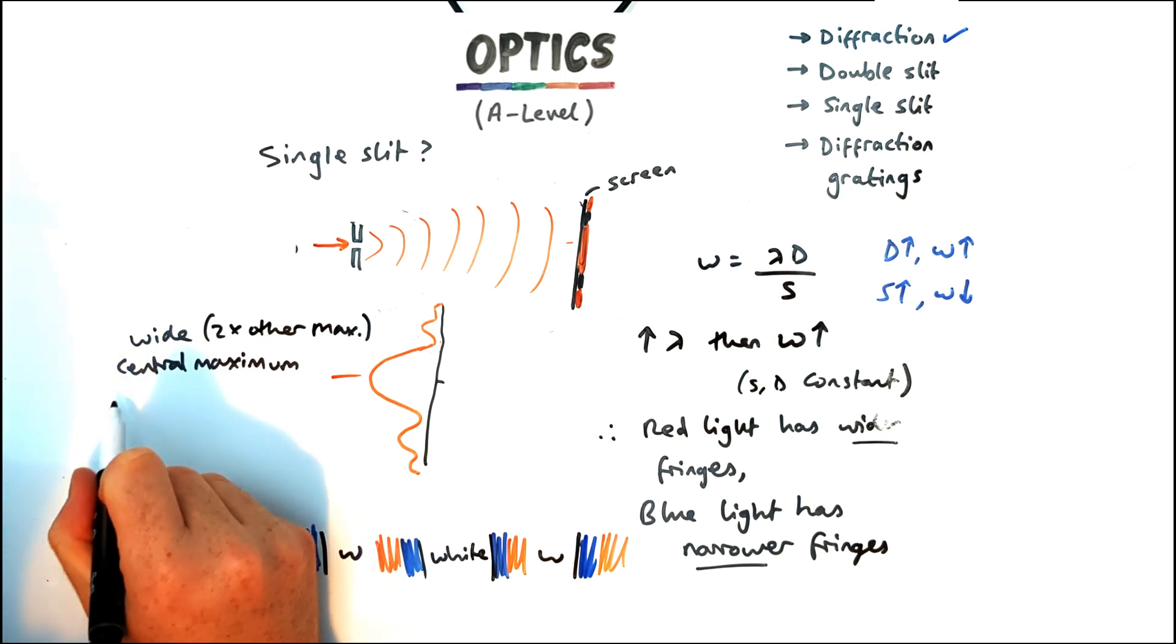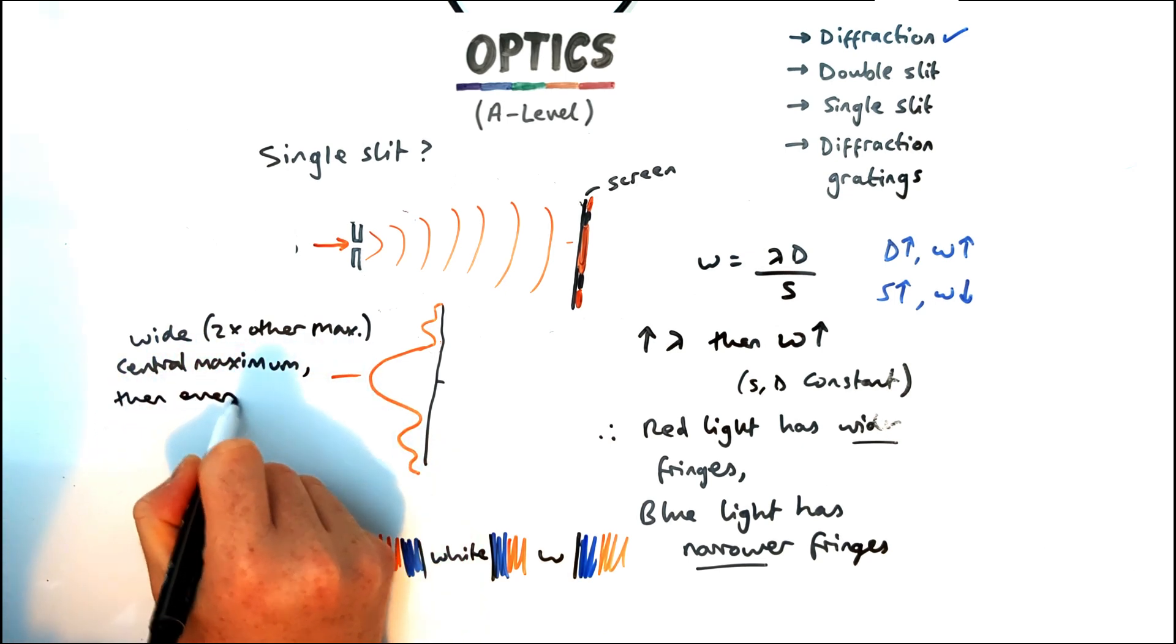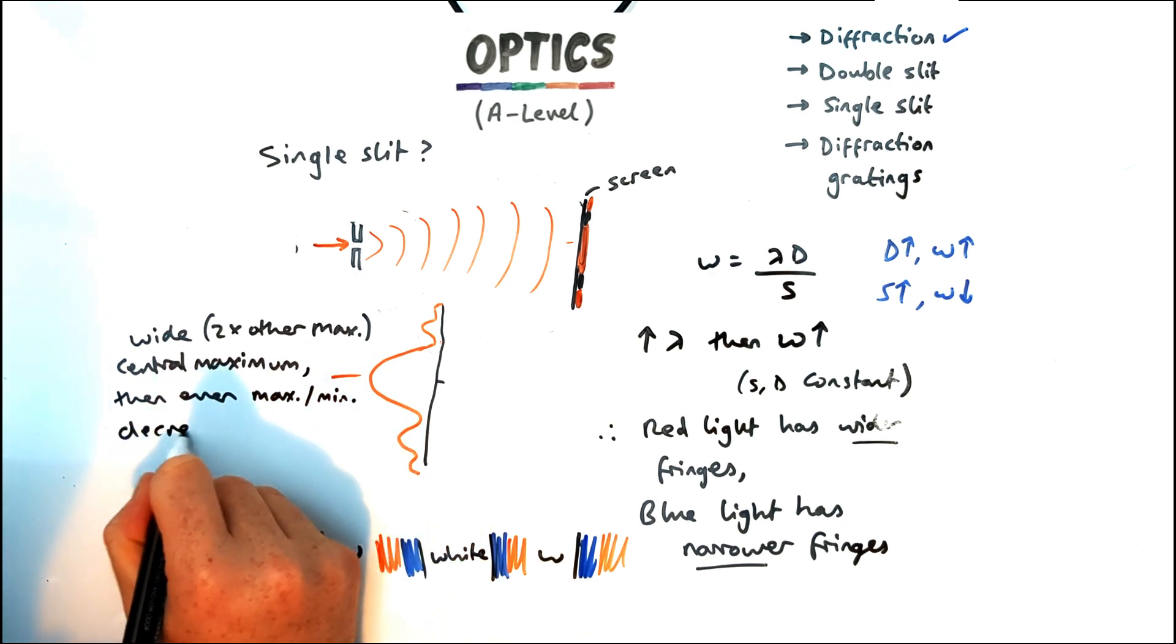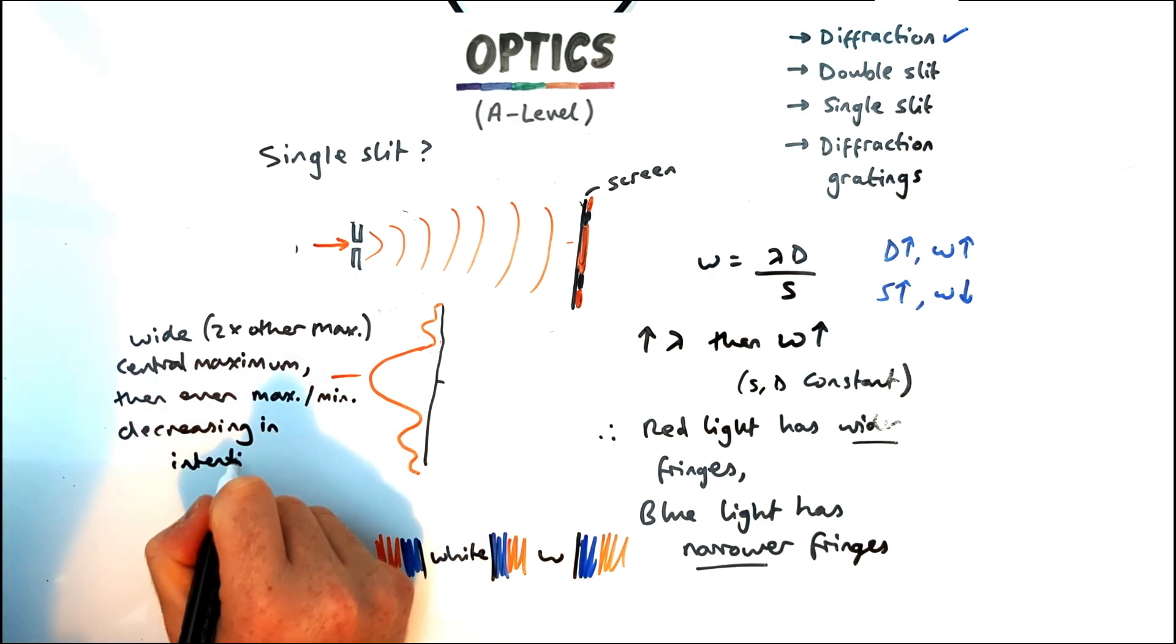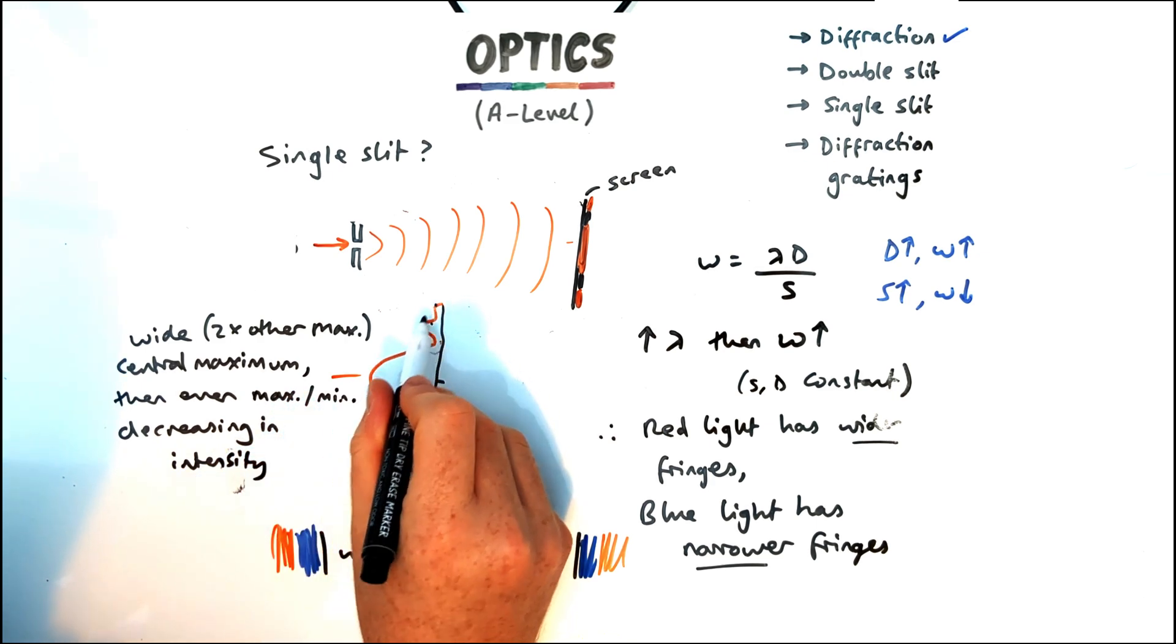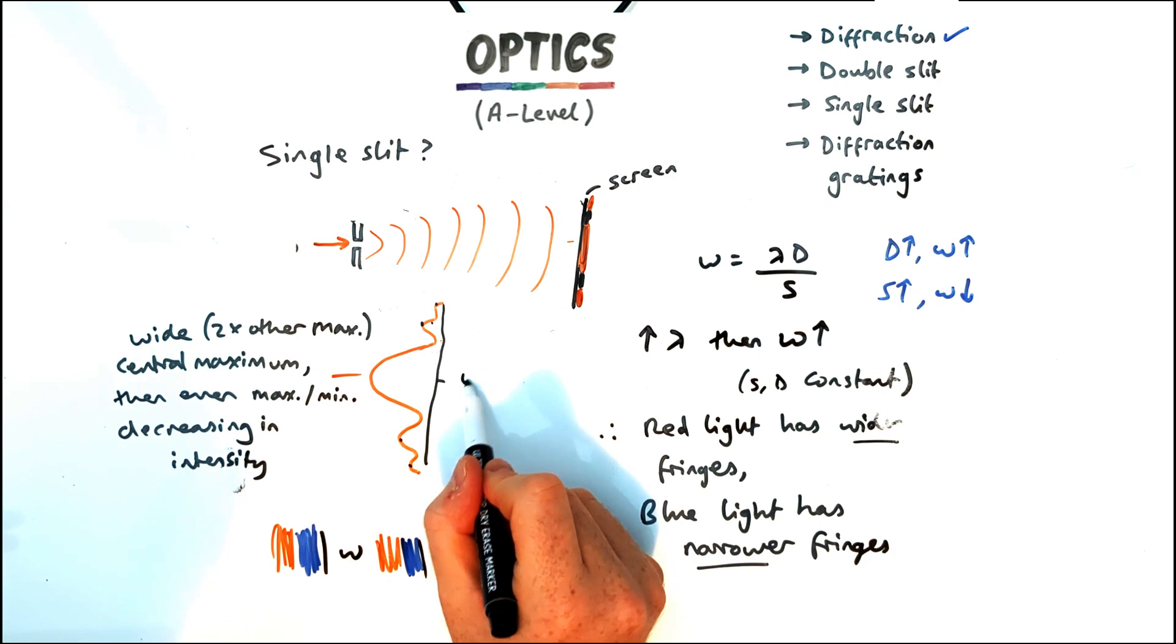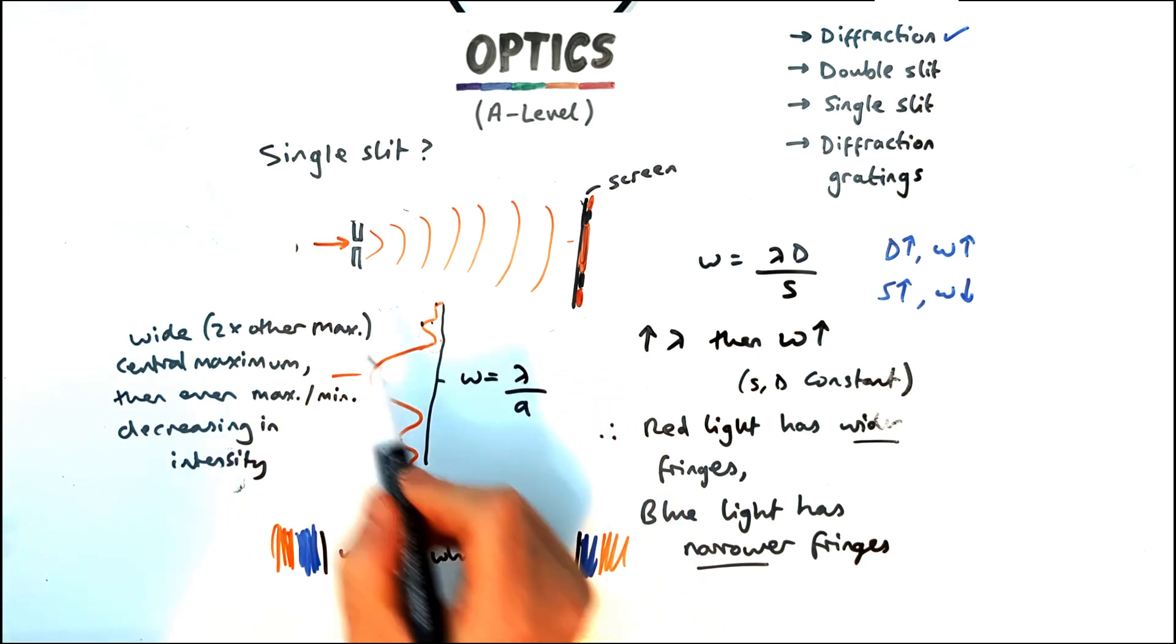So this central maximum which is what it's known as is very wide, it's two times the width of the other fringes. The central maximum if we have monochromatic light would just be one colour and then you'd have even maximums and minimums, maximum and minima decreasing in intensity so they're not even at all in terms of their intensity unlike for a double slit.